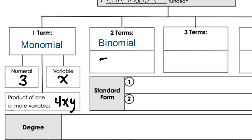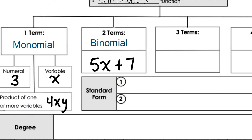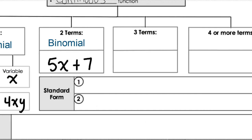For example, it might be something like 5x plus another monomial like 7 — so two monomials added together to make a binomial. Then we have three terms. A three-term polynomial is called a trinomial. Just think about a tricycle with three wheels: a trinomial.